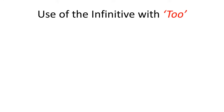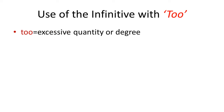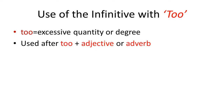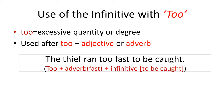What do you mean by 'too'? 'Too' means excessive quantity or degree — you can say it denotes more quantity or degree. The infinitive can also be used after 'too' plus an adjective or adverb. For example: 'The thief ran too fast to be caught.' Here 'fast' is an adverb, so after the adverb we have to use an infinitive.